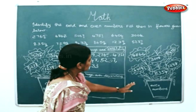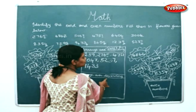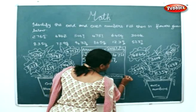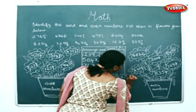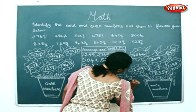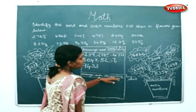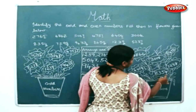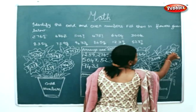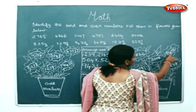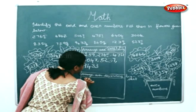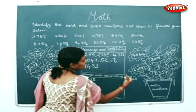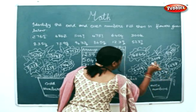Next we will move on to the even numbers, which we are going to arrange in descending order. Descending is nothing but big to small. There are two numbers starting with 8, so we check the hundreds place — 4 is bigger — so I will write 8450 first. The next is 8354.